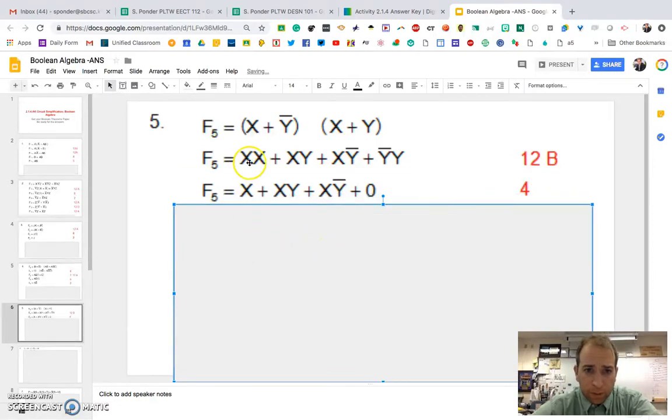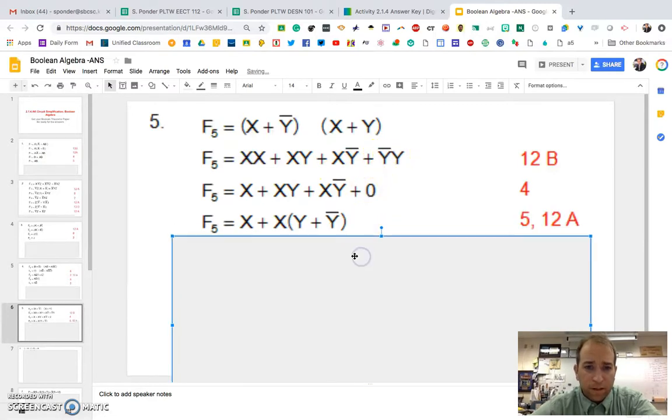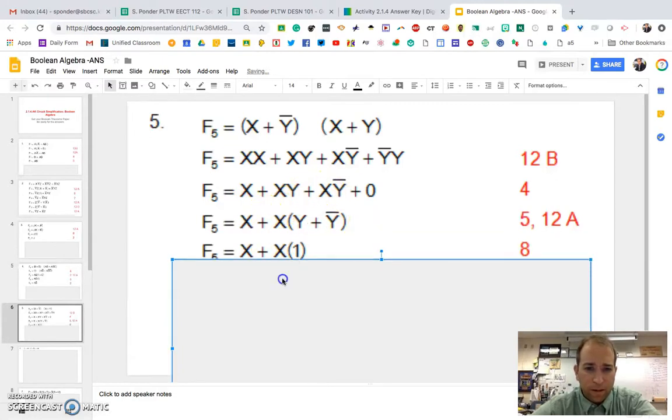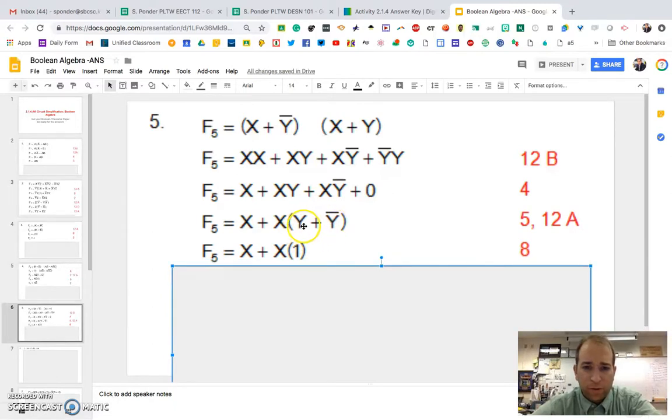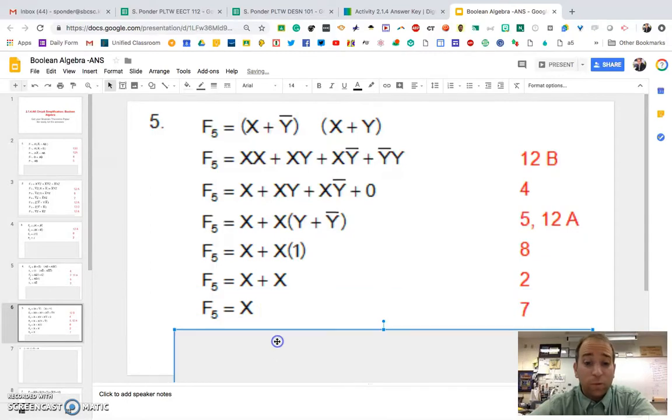Then of course we can take these two X's, and that becomes just a single X. This comes down, this comes down, and then this right here zeroes out. So now we're going to just take out the X here, and we have Y plus a not Y from these two right here. And when you have this Y plus a not Y, that equals one, and then we're left with X plus X. So X plus X equals just X.